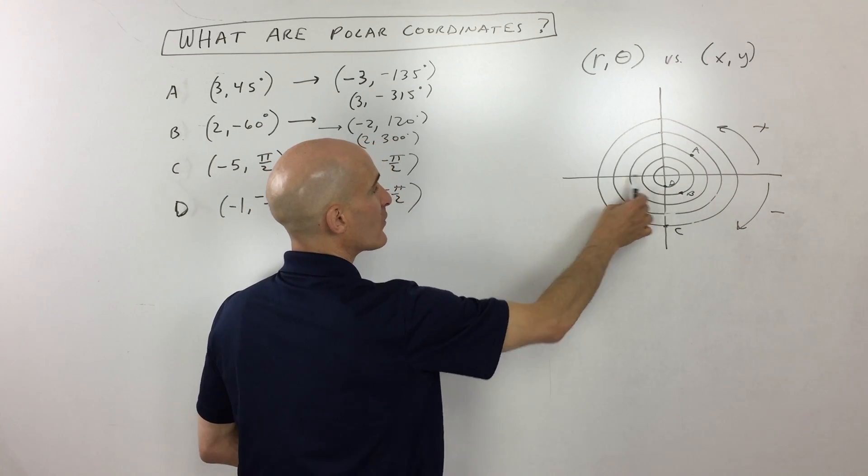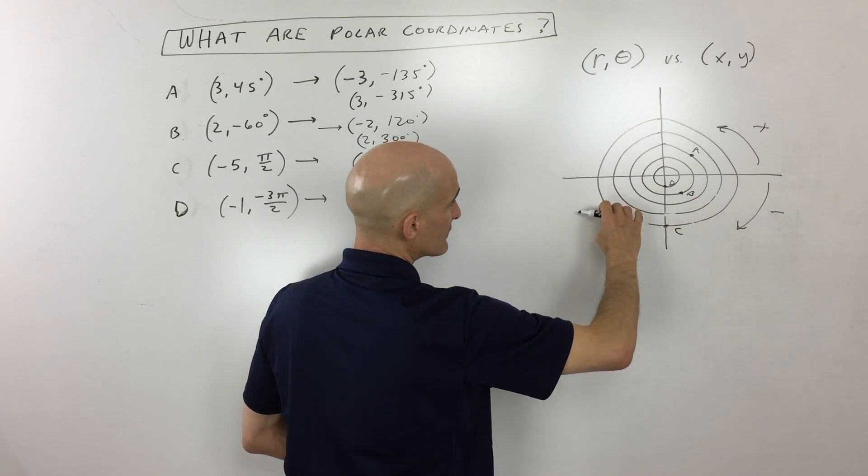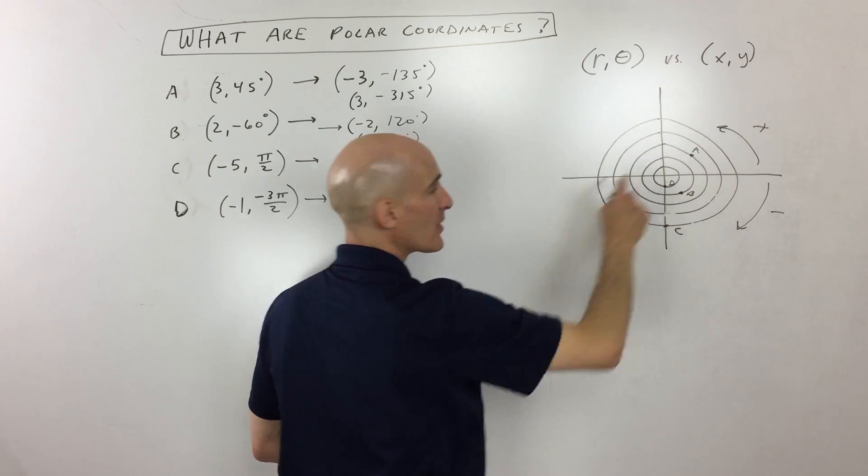And it doesn't matter if you're going with a negative radius, still clockwise is this direction that's negative and counterclockwise is going to be positive.